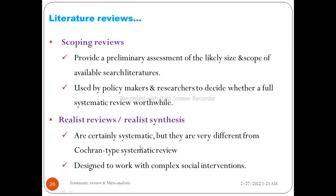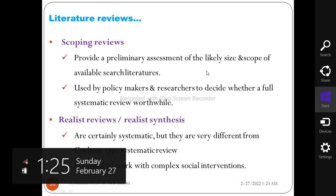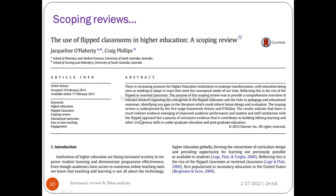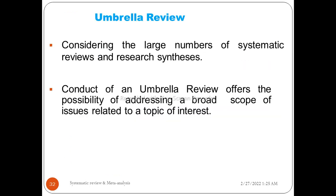An example of a scoping review is 'Use of flipped classrooms in higher education: a scoping review.' Another example is 'Novel coronavirus infection in humans: a scoping review and meta-analysis.' The sixth type is the umbrella review, which considers large numbers of systematic reviews and research syntheses, offering the possibility of addressing a broad scope of issues related to a topic of interest.